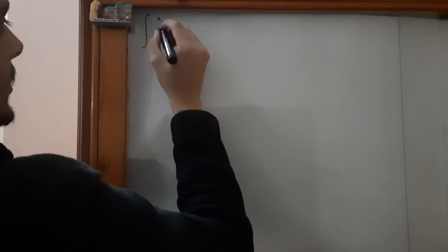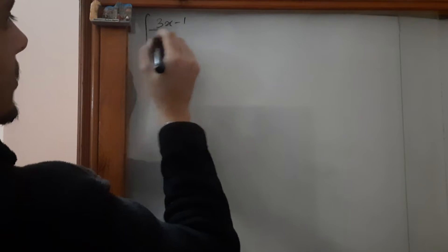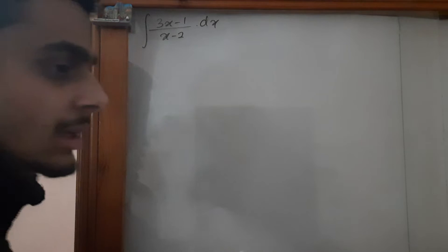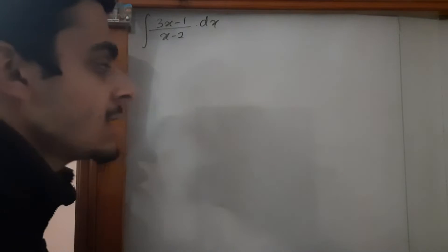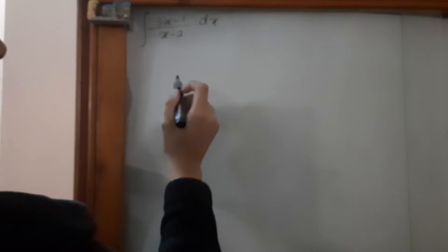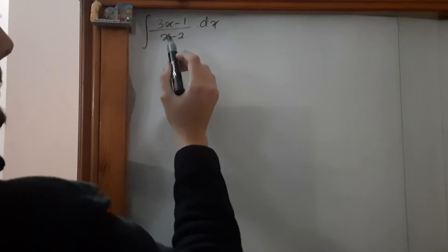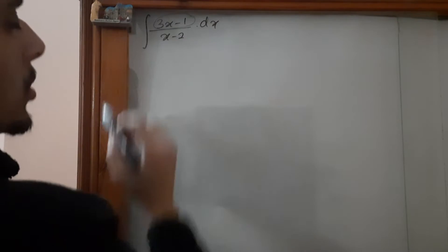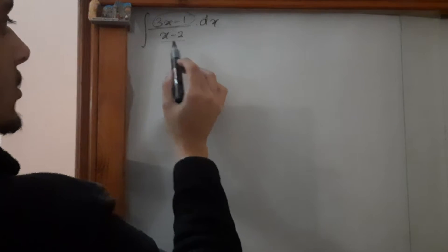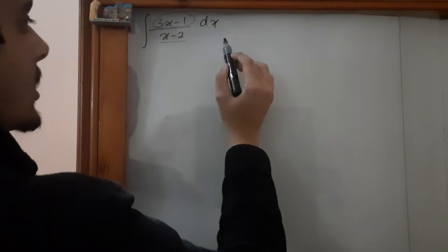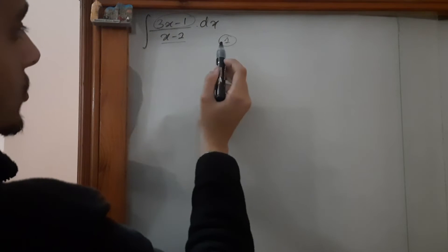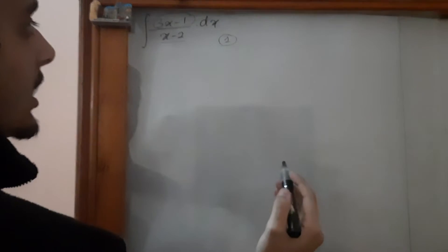So we have (3x - 1) / (x - 2). Whenever we see a question in fraction form, it's best to go one of two ways. The first way is to try and make the numerator equal to the derivative of the denominator. The derivative of the denominator here is simply 1, and we cannot make this equal to 1, so we have to go for the other way.